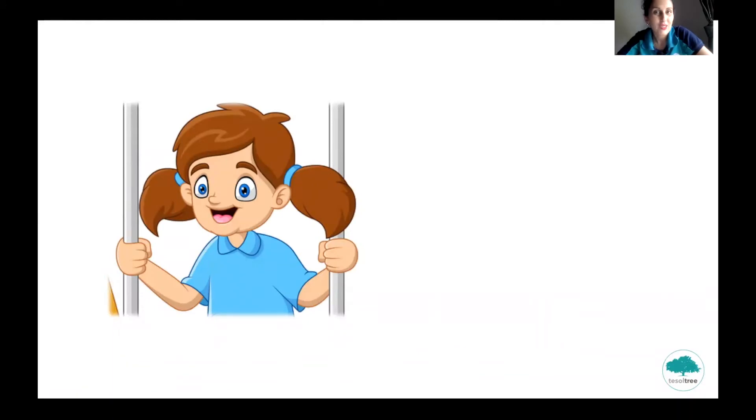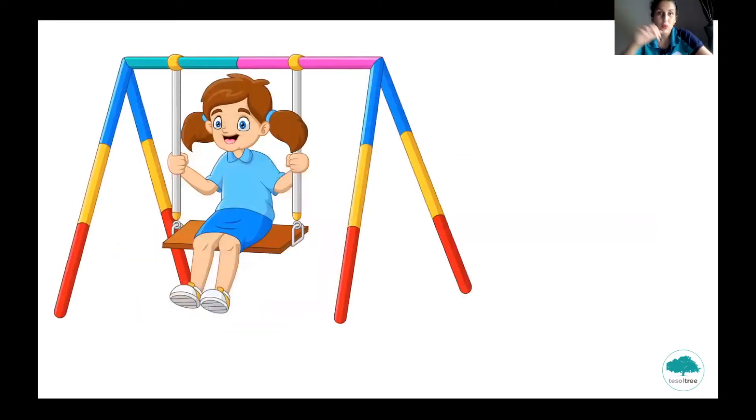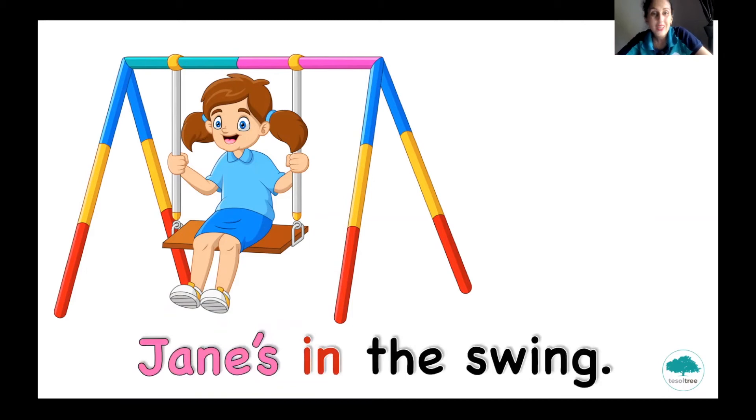And now, we're going to do some activity together. This is Jane. And I want you to look at the picture and tell me, where is Jane? Jane is sitting on the swing. So, Jane's in the swing. Repeat this sentence. Jane's in the swing.